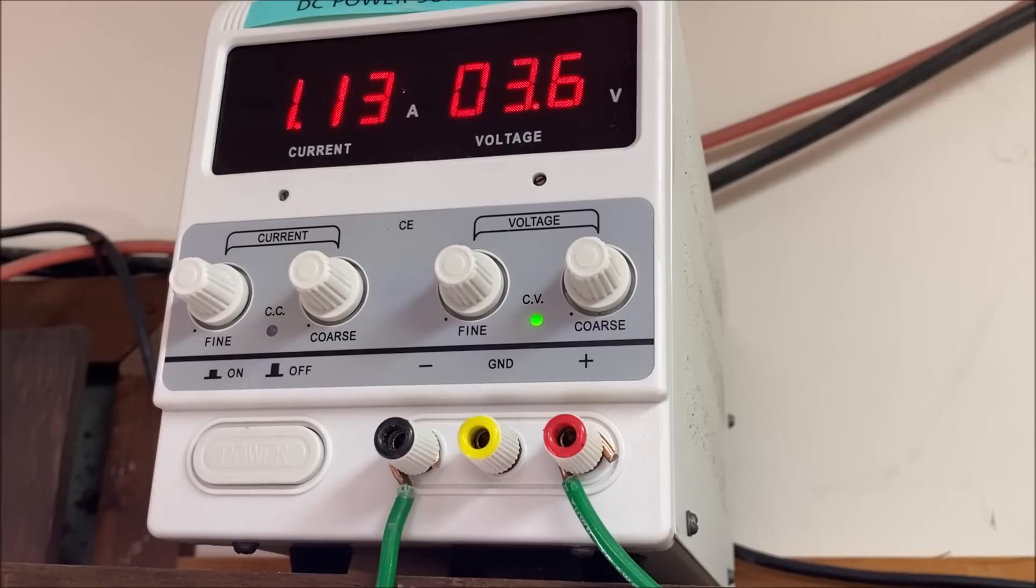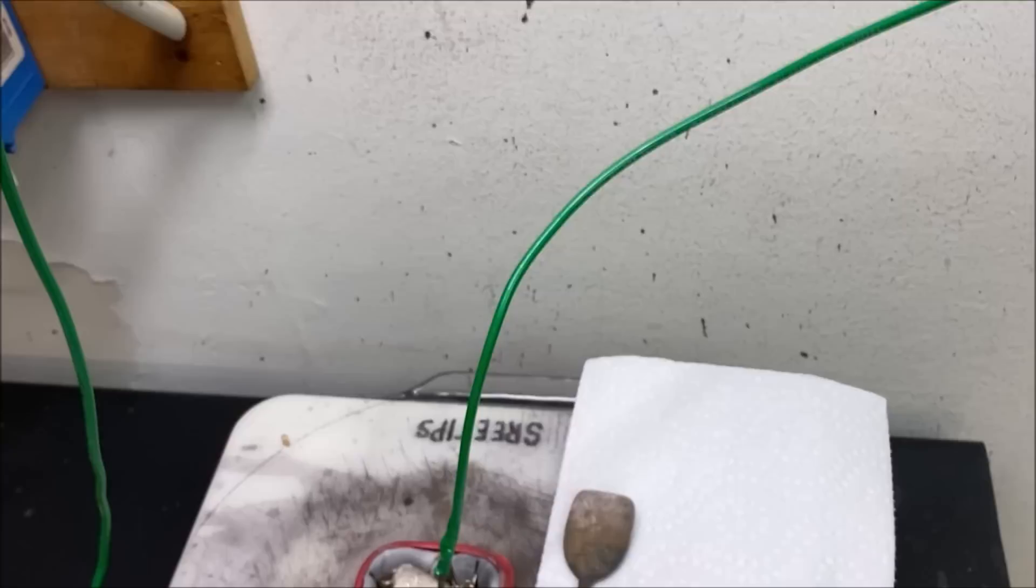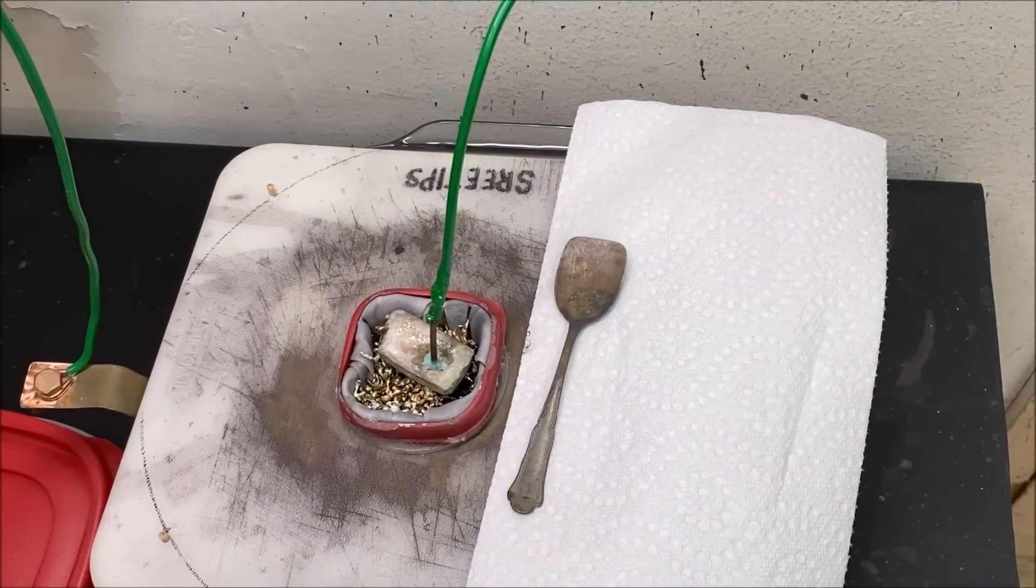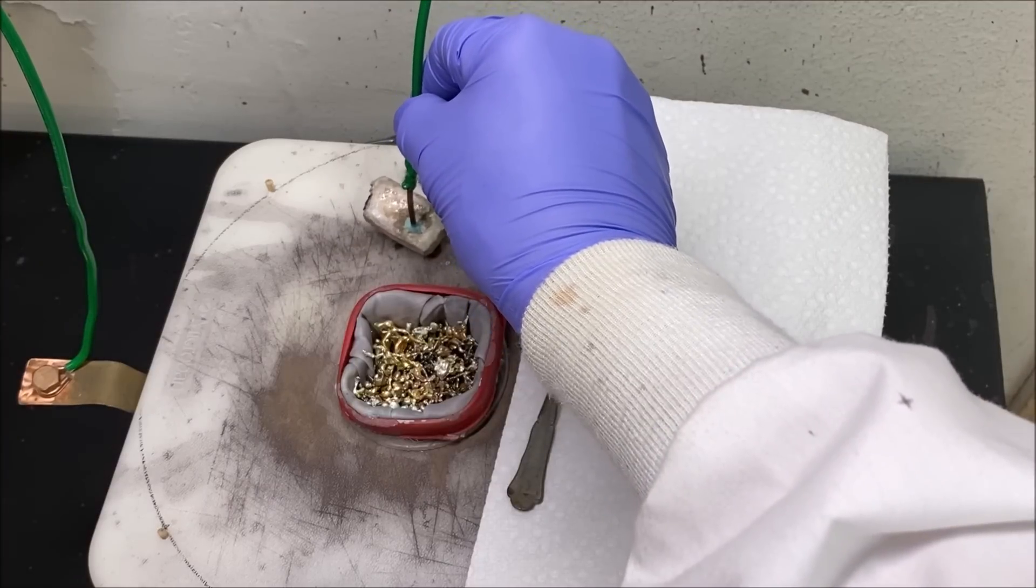Welcome back to my channel everyone, SriTips here. It is day three of the silver cell operation. Here you can see I've got a nice current flow, 1.1 amps at 3.6 volts. What we're going to do now is I'm going to come down here and take the electrode bar out of the anode basket and set it over here off to the side.